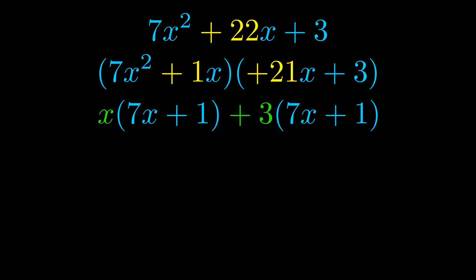Notice also how what remains inside of the parentheses is the same in both cases. The blue values are the same. Those blue values will become one of our factors and we will combine the two green values, the GCFs that we pulled out, to get the other one. And that is our fully factored equation.